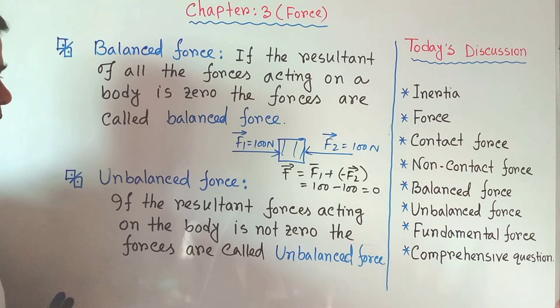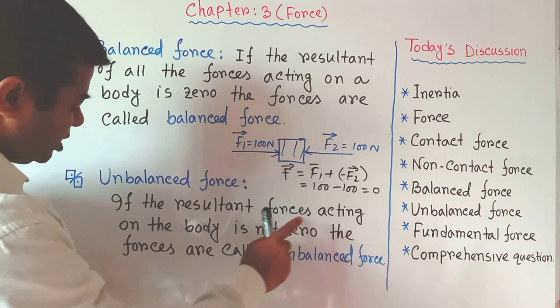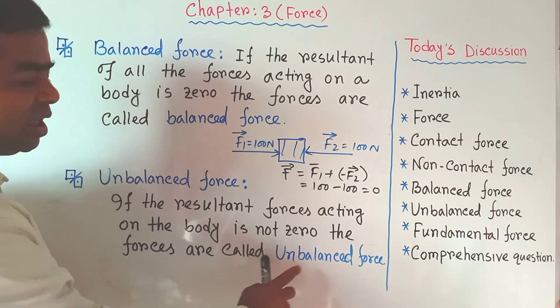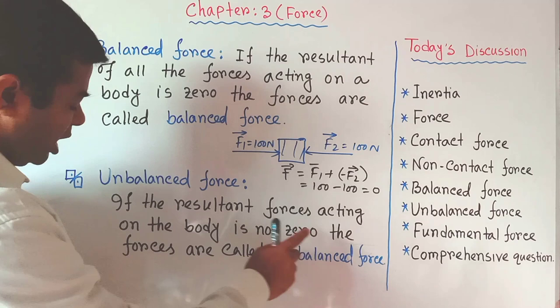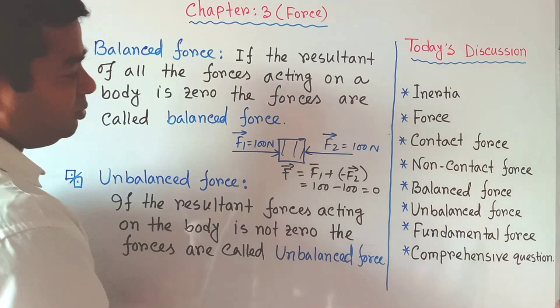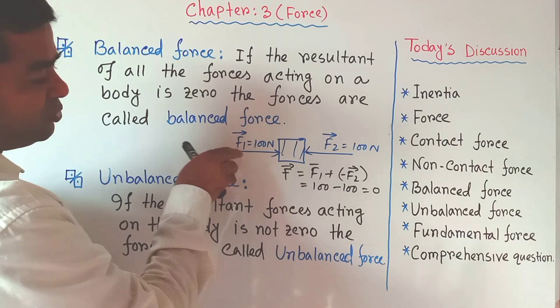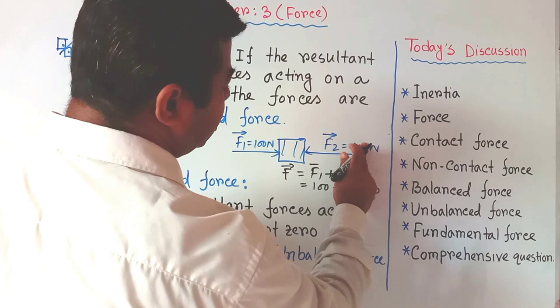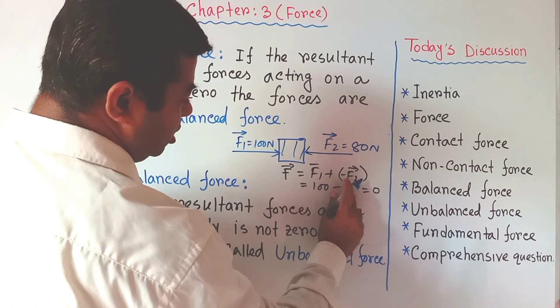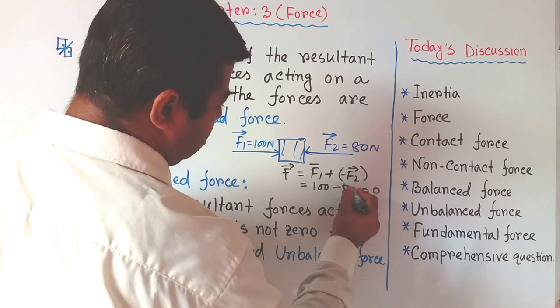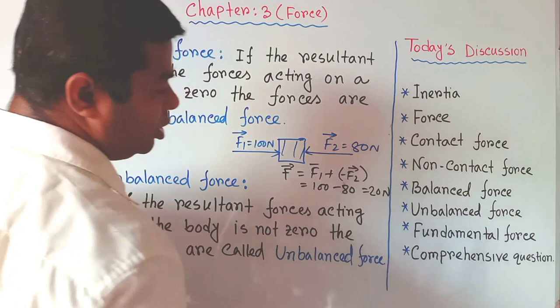Unbalanced force: if the resultant of all forces acting on a body is not zero, the forces are called unbalanced force. For example, if I apply 100 newtons from one side and 80 newtons from the opposite side, the resultant force will be 20 newtons. This is unbalanced force.